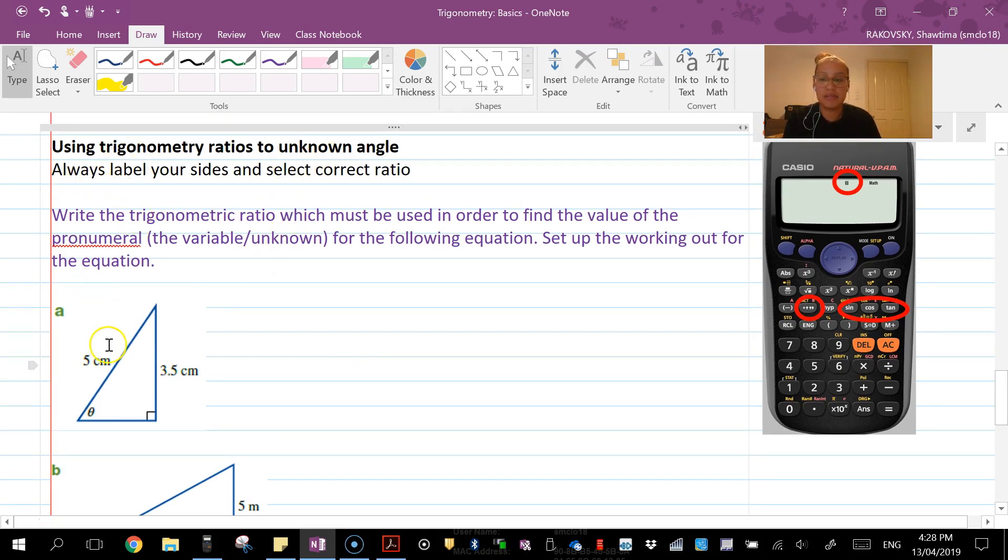Here we have using trigonometry ratios to find the unknown angle. Let's assign our hypotenuse, opposite and adjacent labels and identify which ratio we need. Here's my theta, opposite and adjacent. I can see I've got opposite and hypotenuse, so this is a sine ratio. Sine theta equals opposite over hypotenuse. Substitute the values: theta is unknown, opposite is 3.5, and hypotenuse is 5.